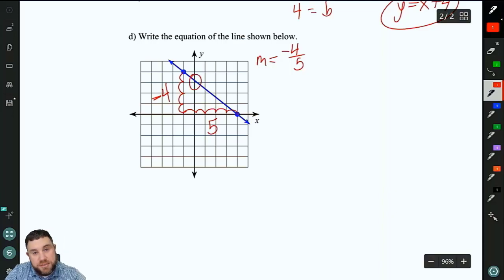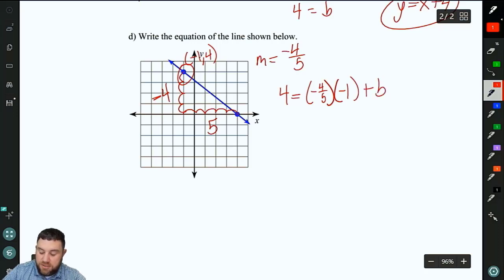It looks like, remember pictures can be misleading. It looks like we're close to 3 on there. But we don't necessarily want to trust that. So let's plug in. I'm going to use this point. That's negative 1, 4. So if we have 4 equals negative 4 fifths times negative 1 plus b. So that'll be 4 equals 4 fifths plus b. So we'll subtract 4 fifths from both sides. So that will be 16 fifths.